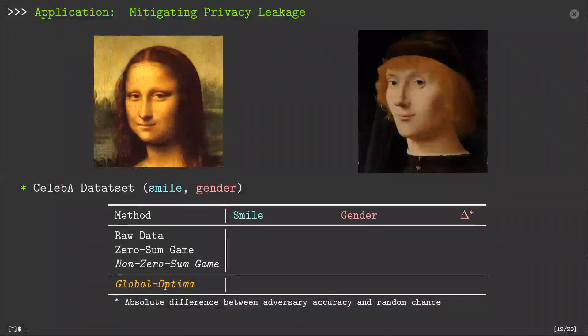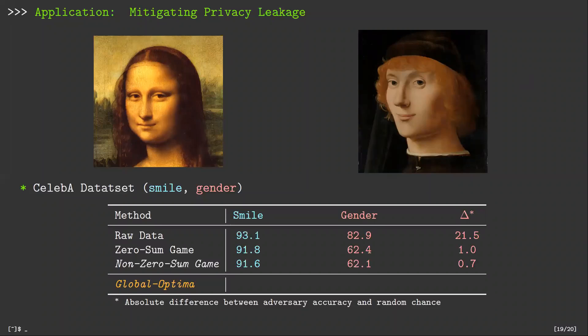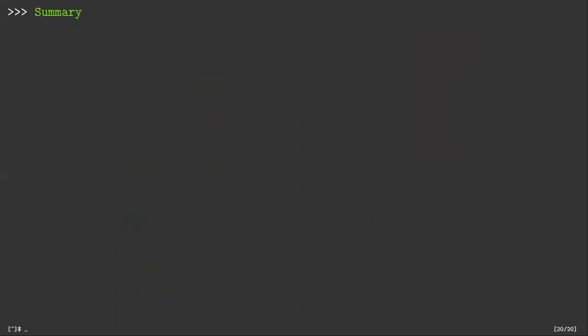In the second experiment, we considered smile detection while gender is the private attribute. The naive classification results in 21.5% of privacy leakage. The zero-sum game approach can reduce the privacy leakage to only 1%, however, it comes with the cost of losing 1.5% target classification accuracy. The performance of non-zero-sum game approach is comparable to that of the zero-sum game approach. On the other hand, our global optimal approach leaks no information about gender, while keeping the target classification only 0.5% below the benchmark accuracy.